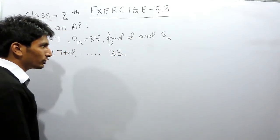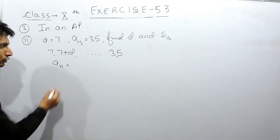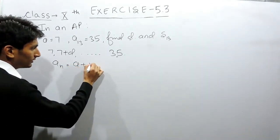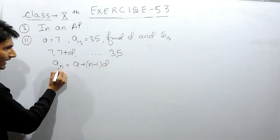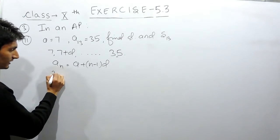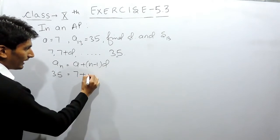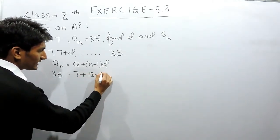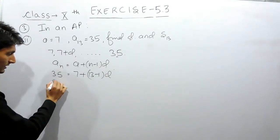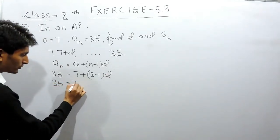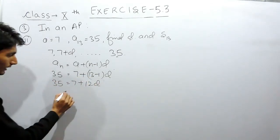To find out the last term, we have a formula: an equals a plus (n minus 1) times d. The last term is given to you as 35, which is A13, and the first term is 7. There are 13 terms in this AP and the common difference you have to find out. Now, 35 equals 7 plus 12d.